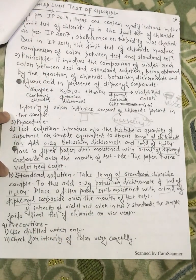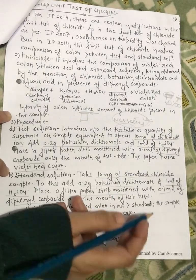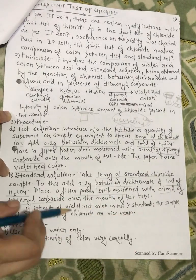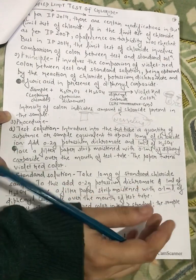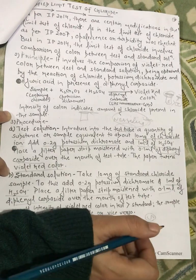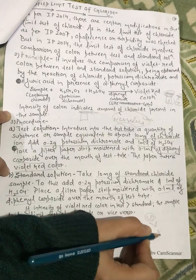Then we will do what we will do. If the intensity of violet red color in test is greater than standard, the sample fails the limit test of chloride and vice-versa. The standard filter paper moistened with diphenyl carbozide, the intensity of purple color, needs to be more than test. Then we will pass the limit test, otherwise we will fail.